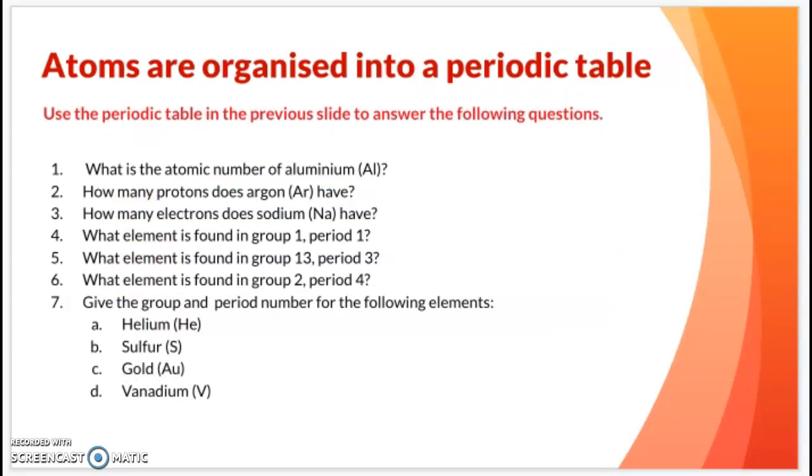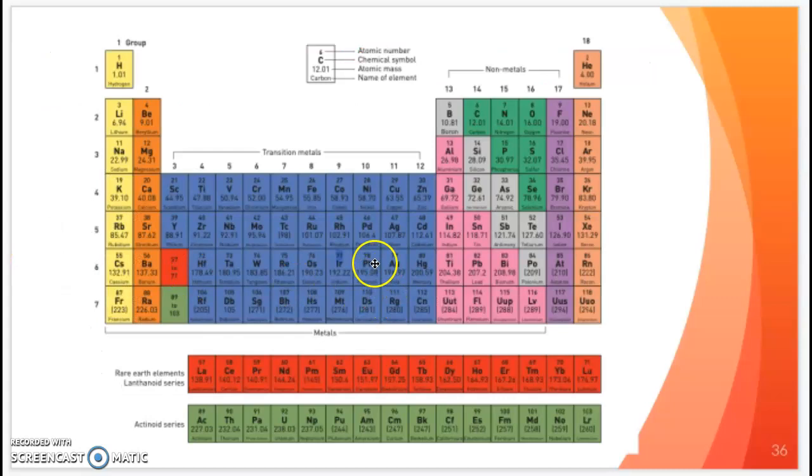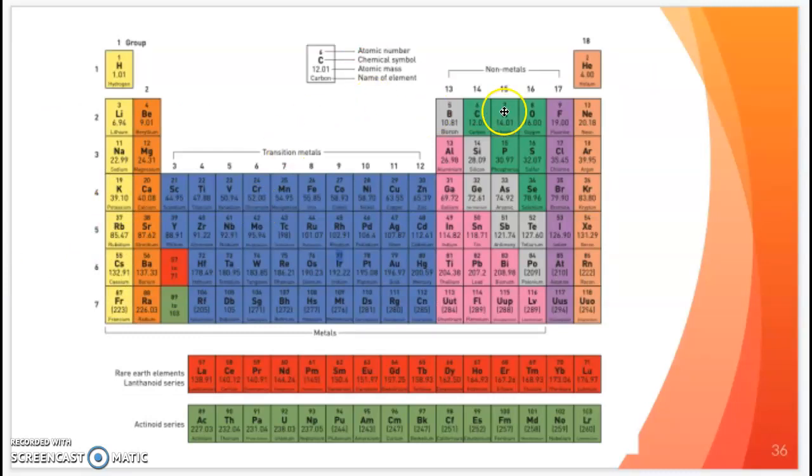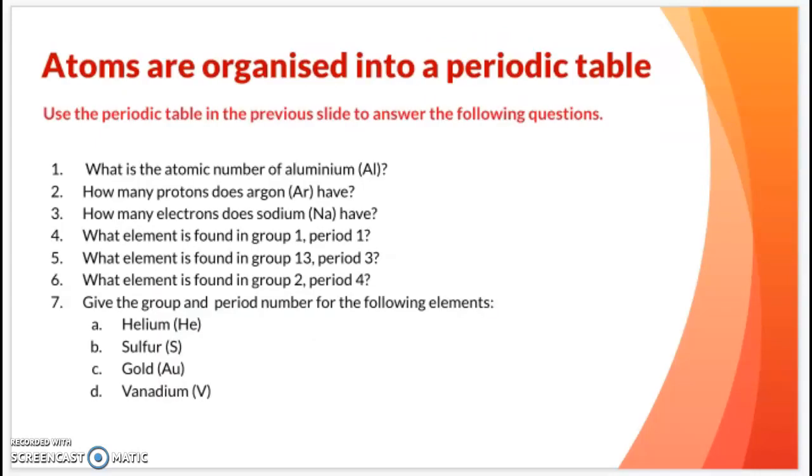Now these are just some questions I want you to have a go at answering. For example, if you look at three, how many electrons does sodium have? You're going to be using some of your prior knowledge. Remember, the atomic number equals the number of electrons. Sodium, where are you? Na. It's got the atomic number of 11. I know the number of electrons are also 11. If I give you a group and a period, you're kind of doing like you're bringing your fingers down to find out. Let's do five. Group 13, period five. Period five gives us our indium. Please have a go at that.